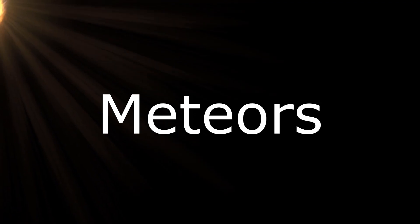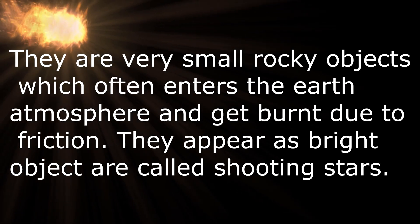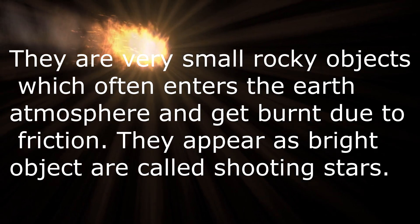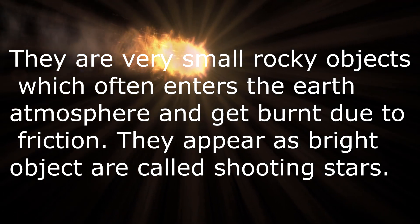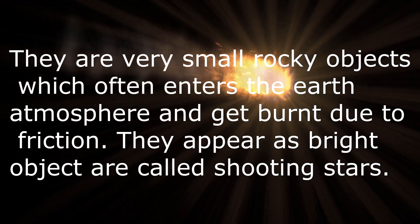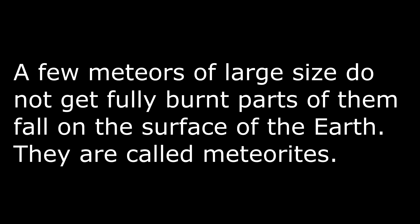Now the next is meteors. They are very small rocky objects which often enter the earth's atmosphere and get burned due to friction. They appear as bright objects and are called shooting stars. A few meteors of large size do not get fully burned. Parts of them fall on the surface of the earth. These are called meteoroids.